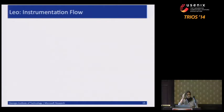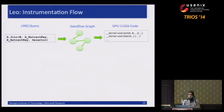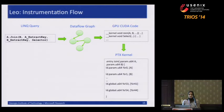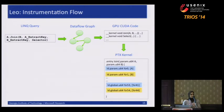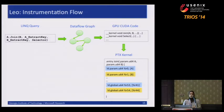Here's how the instrumentation flow works together. We start with a LINQ query, generate a data flow graph, generate the GPU code, and extract the PTX kernel. For example, in a join on two data structures A and B, it might be that one doesn't need transformation because it has high memory efficiency. We do taint analysis to associate global memory accesses to the corresponding parameter — so we know the first load is associated with data structure A and the second with B.